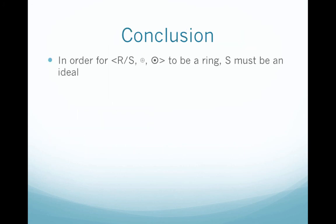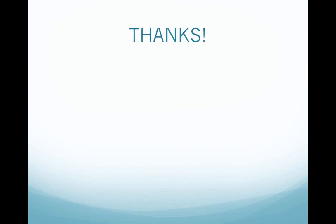In conclusion, we need S to be an ideal in R, and then we can build our set of cosets and use our two operations to have R mod S be a ring. Thanks for watching!